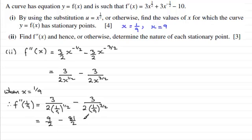And what this comes to is -36, which is a negative value, less than 0. So therefore what we have is a maximum. A maximum then at x = 1/9.